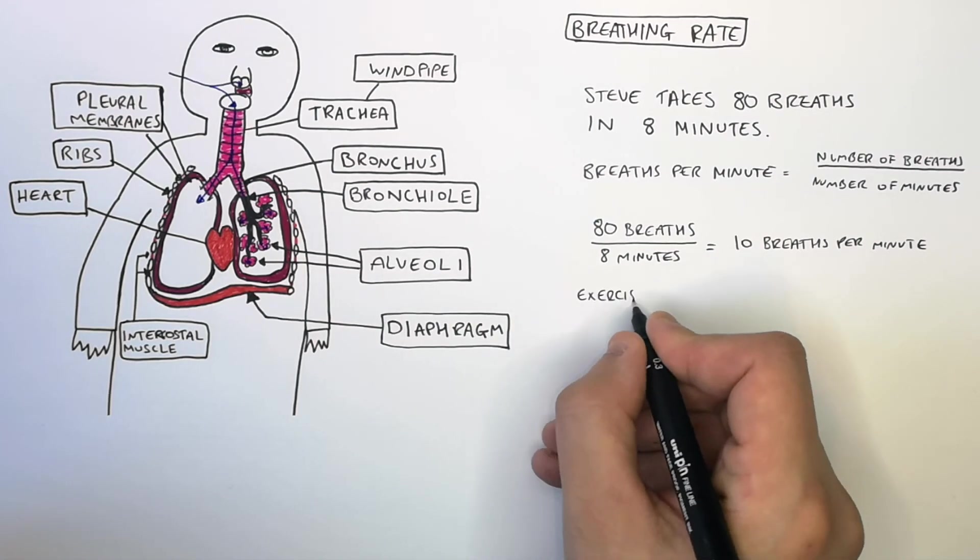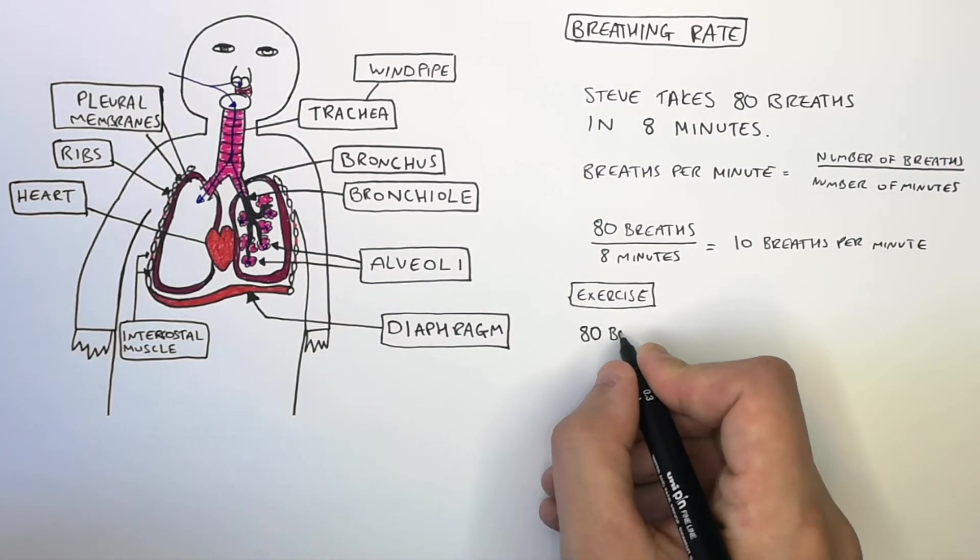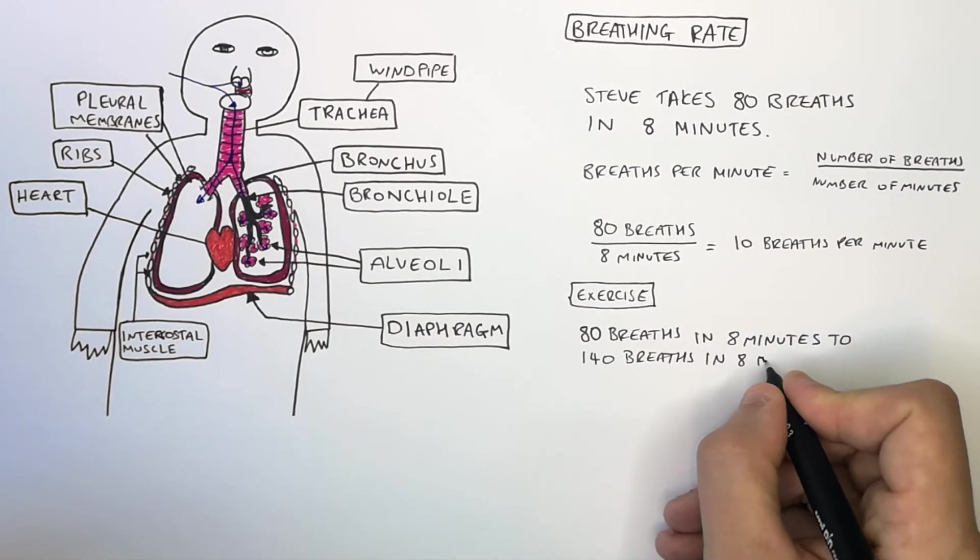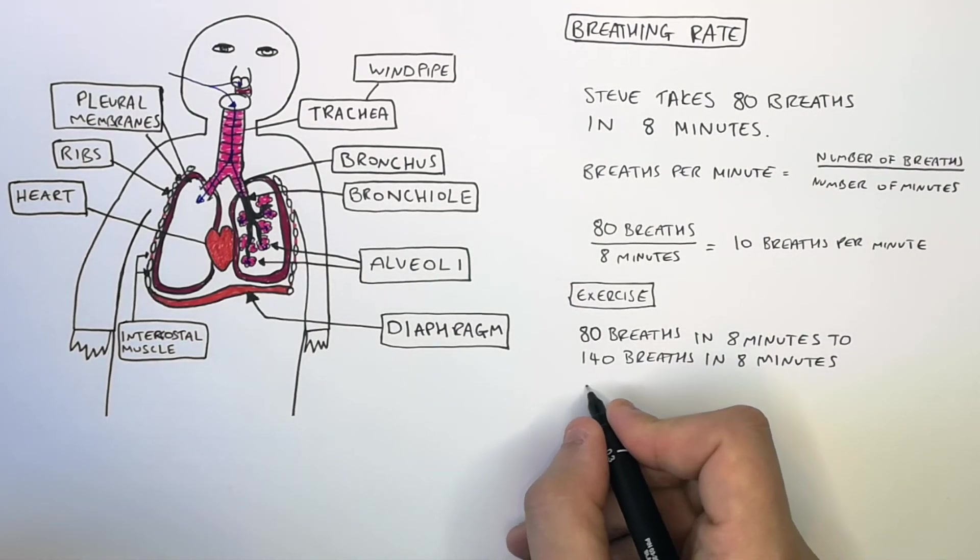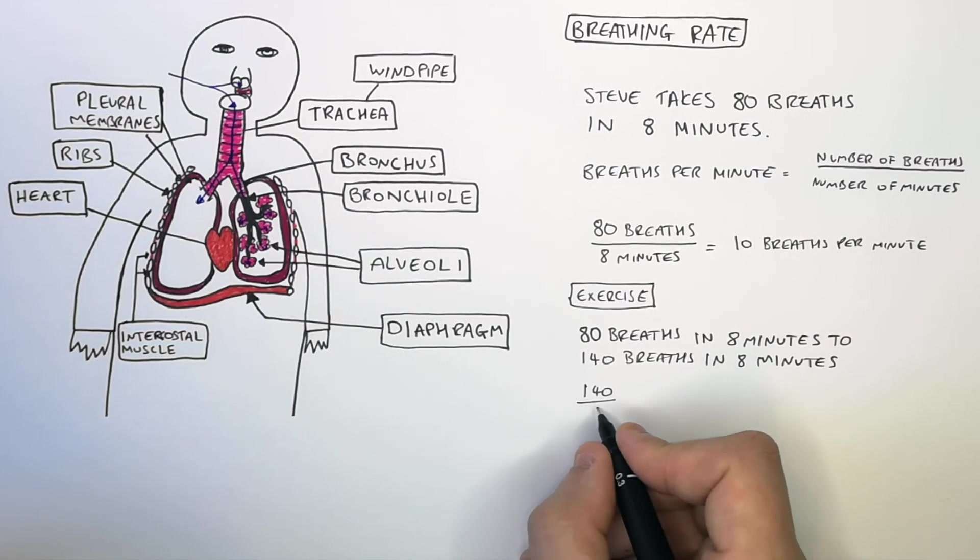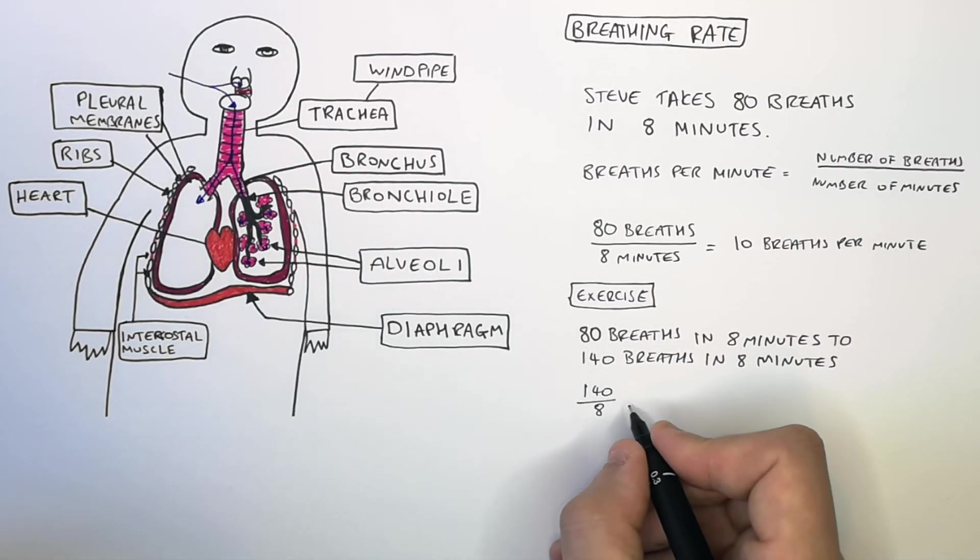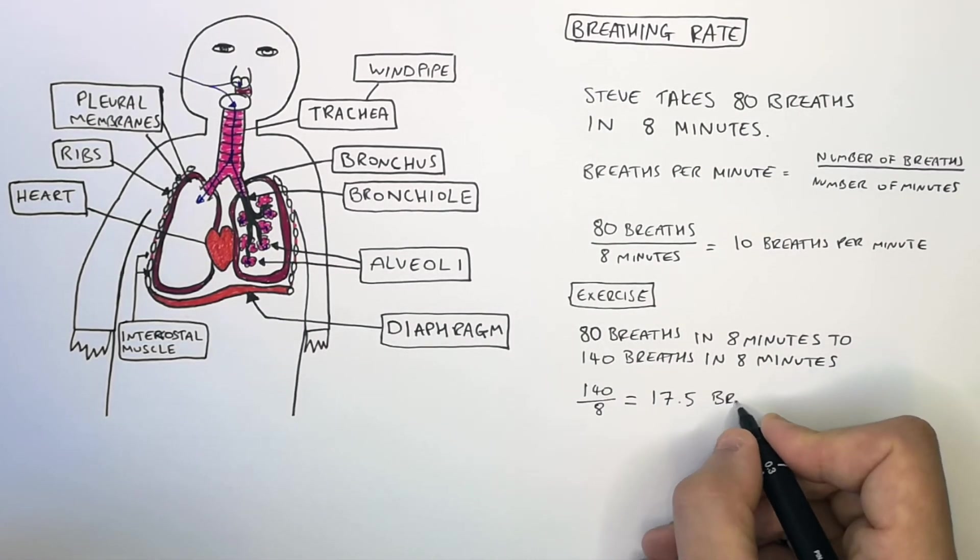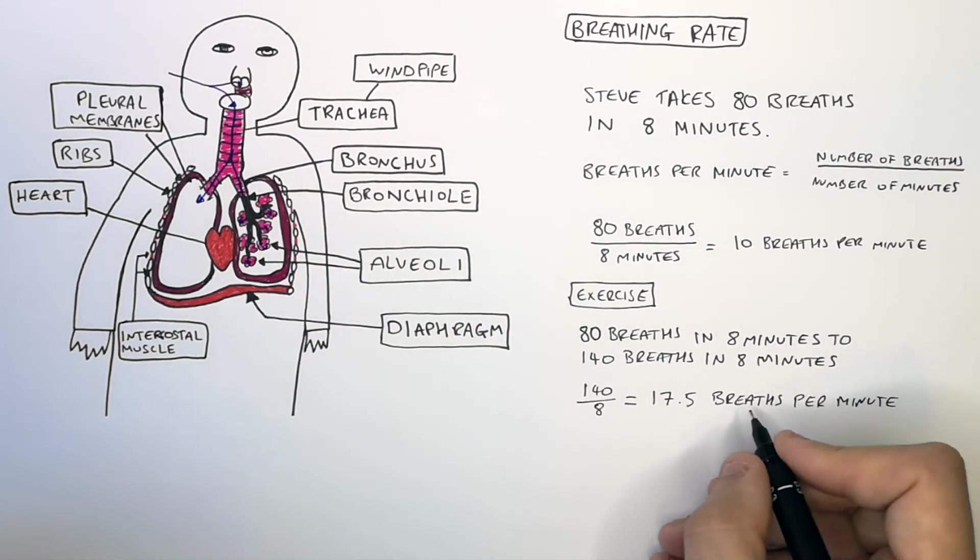During exercise, Steve goes from breathing 80 breaths in 8 minutes to 140 breaths in 8 minutes. So you do total number of breaths, which is 140, divided by the number of minutes, which is 8 minutes, which gives you an answer of 17.5 breaths per minute.